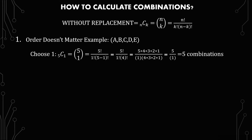The first one I want to go over is simply choosing one out of five. So we have the notation 5C1, or 5 choose 1, which equals 5 factorial over 1 factorial times 5 minus 1 factorial, which equals 5 factorial over 1 factorial times 4 factorial. These two numbers in the denominator should add up to the top number — that's a useful check. Expanding the factorials, the 4 factorial cancels out, and we get 5 over 1, or 5 combinations.